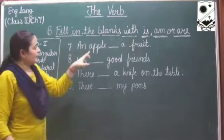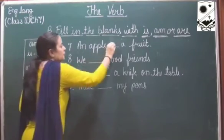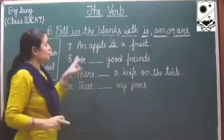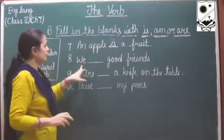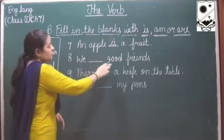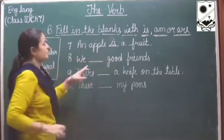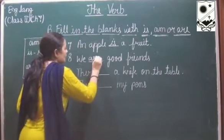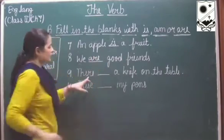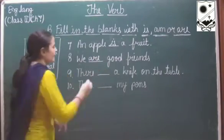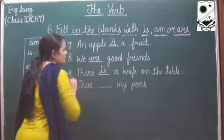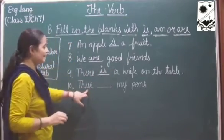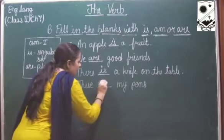An apple - we are talking about one apple, so an apple is a fruit. We - we means more than one, so we are good friends. There is a knife on the table - is, because knife is singular. These are - we use are for plural.